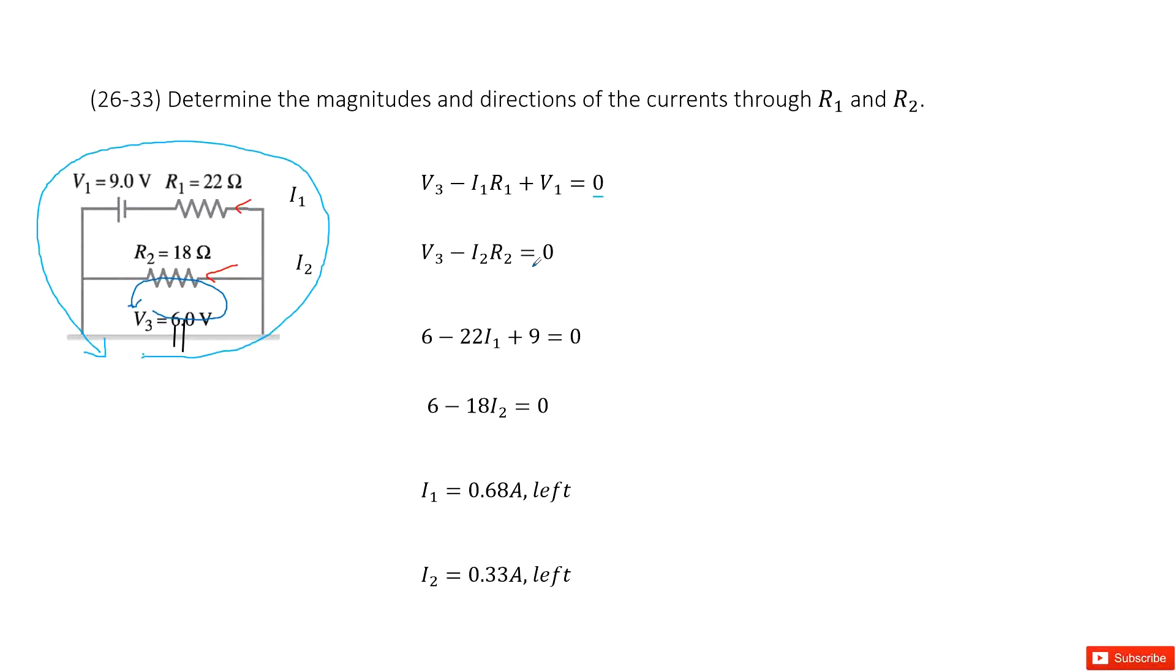There we can input the given quantities: V3 as 6, R1 as 22, R2 as 18, and V1 as 9. So you can see, there are two unknowns and two equations. So very easily, you can solve these equations and get the answer.